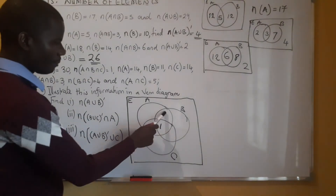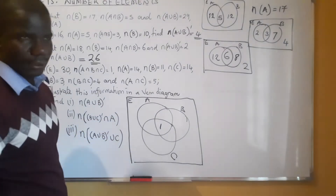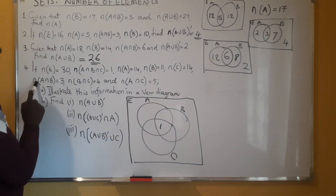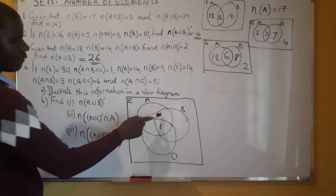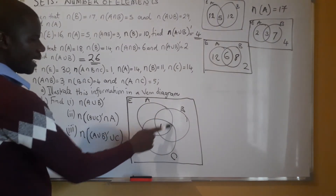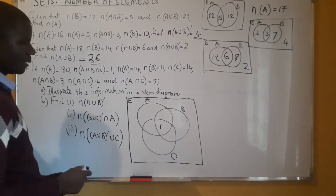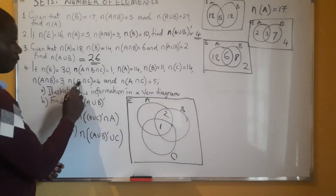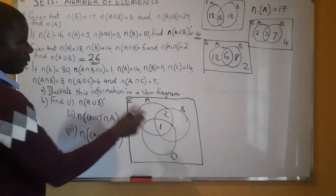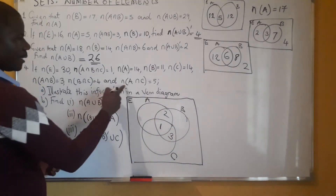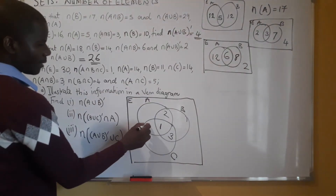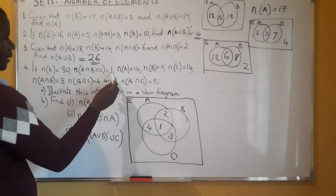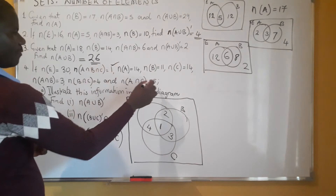We start with the intersection of all three sets, which is 1 — that goes in the center. Then we come to the intersection of A and B, which should have 3 elements; we already have 1, so the remaining 2 goes here. The intersection of B and C should have 4 elements; we already have 1, so 3 goes here. The intersection of A and C should have 5 elements; we already have 1, so 4 goes here.